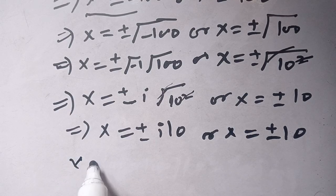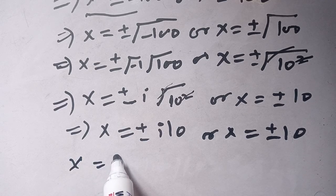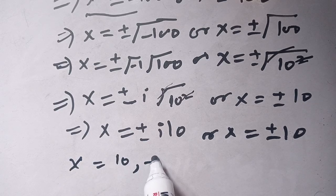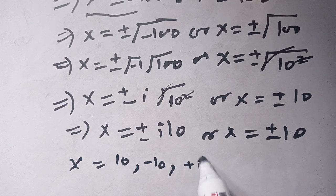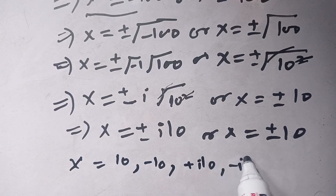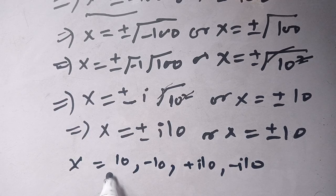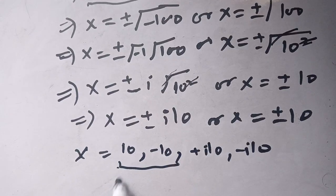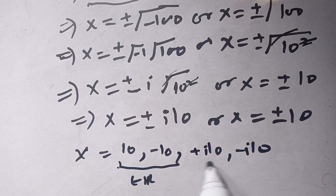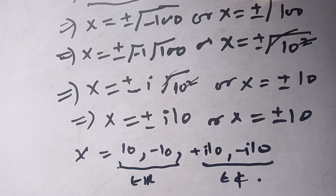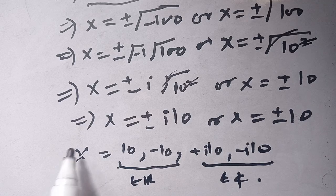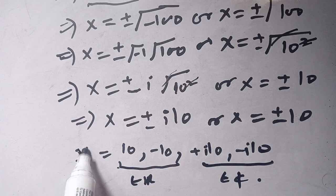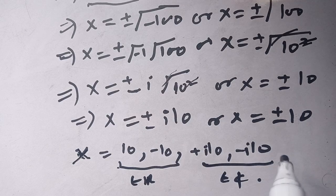So there are four values of x: positive 10, negative 10, positive 10i, and negative 10i. The values plus 10 and minus 10 belong to the real numbers, while plus 10i and minus 10i are complex numbers. Overall, there are two real roots and two complex roots — four roots in total.